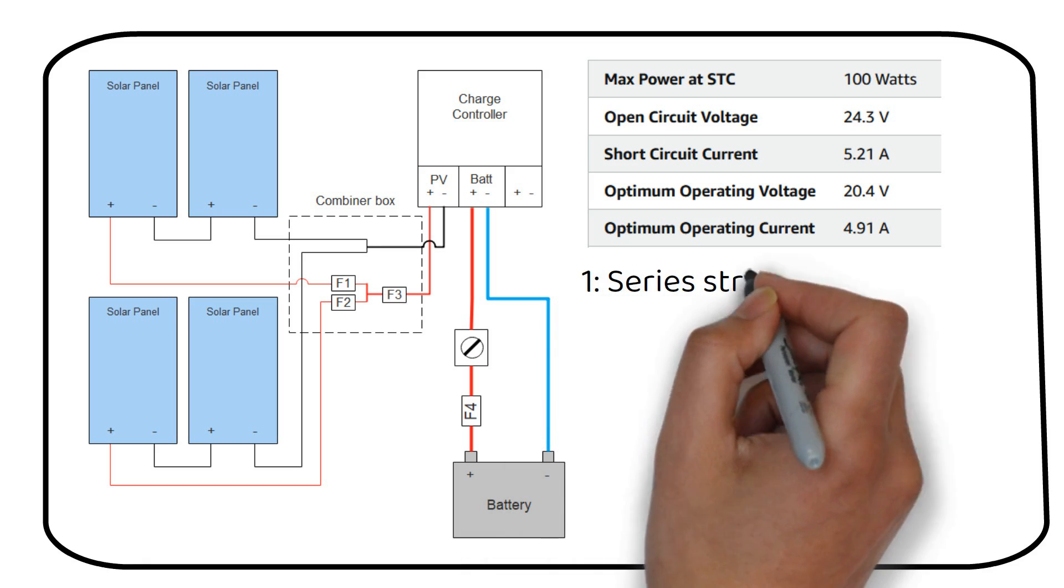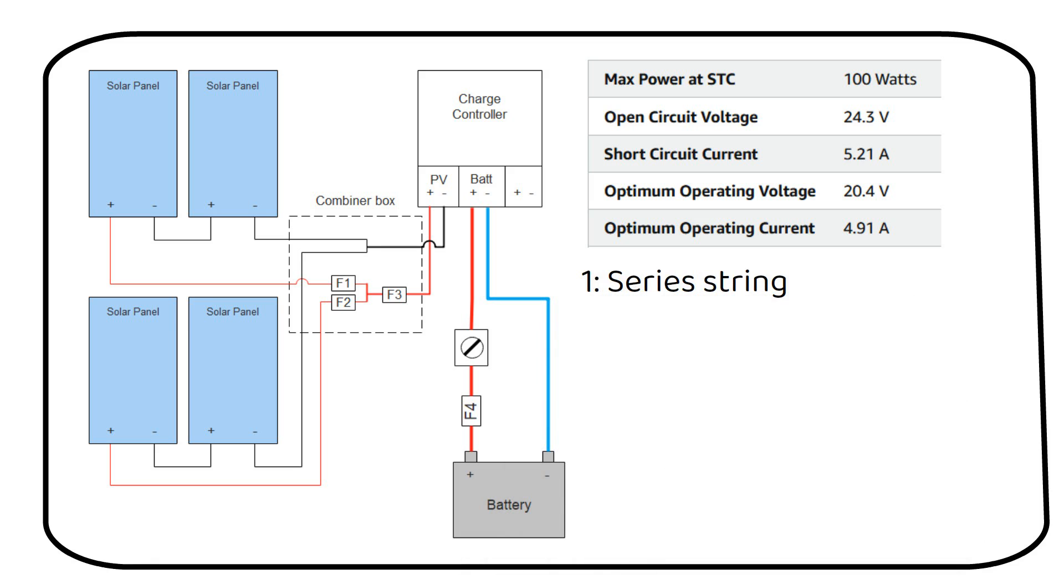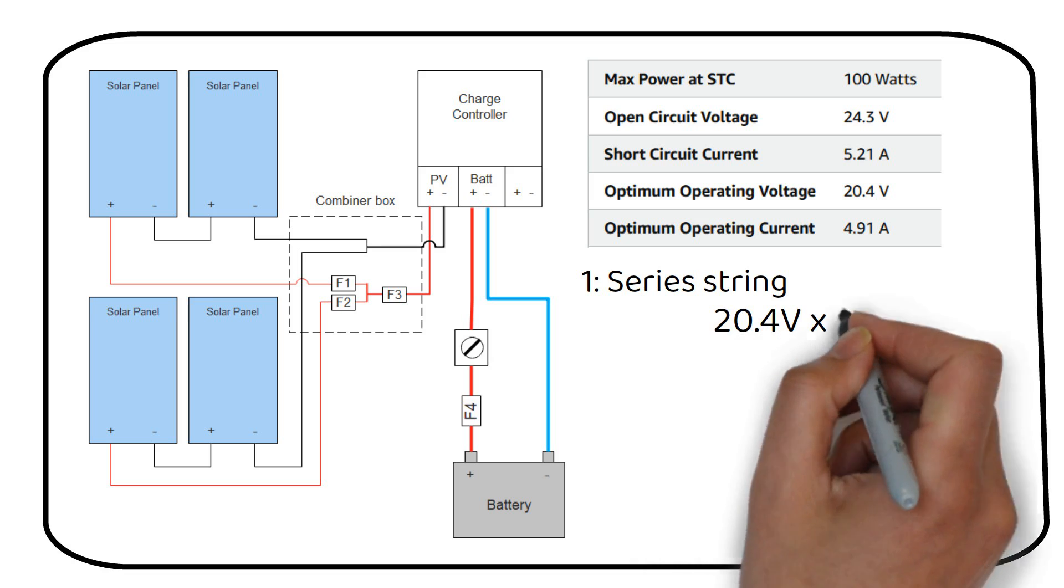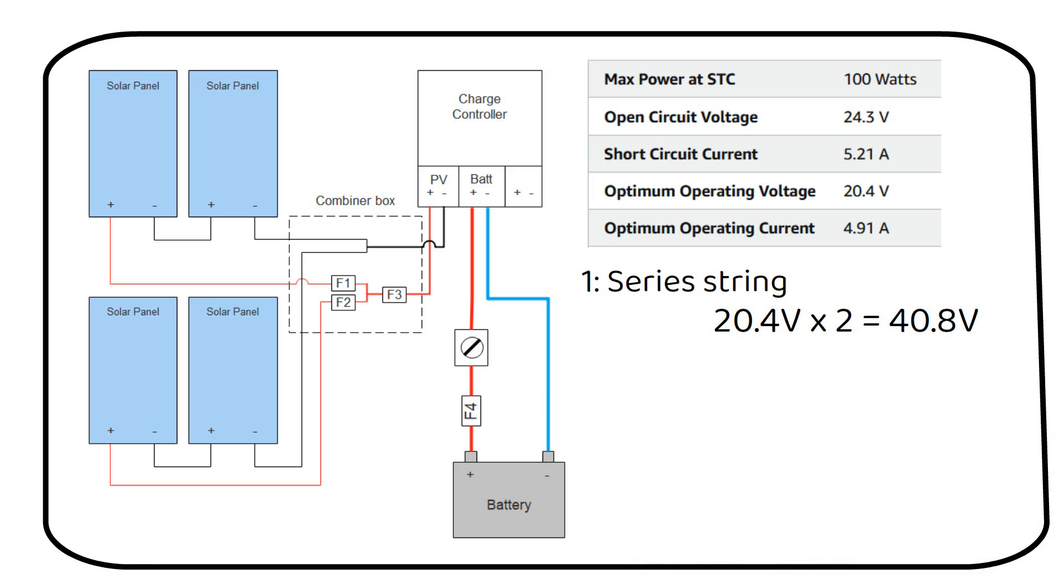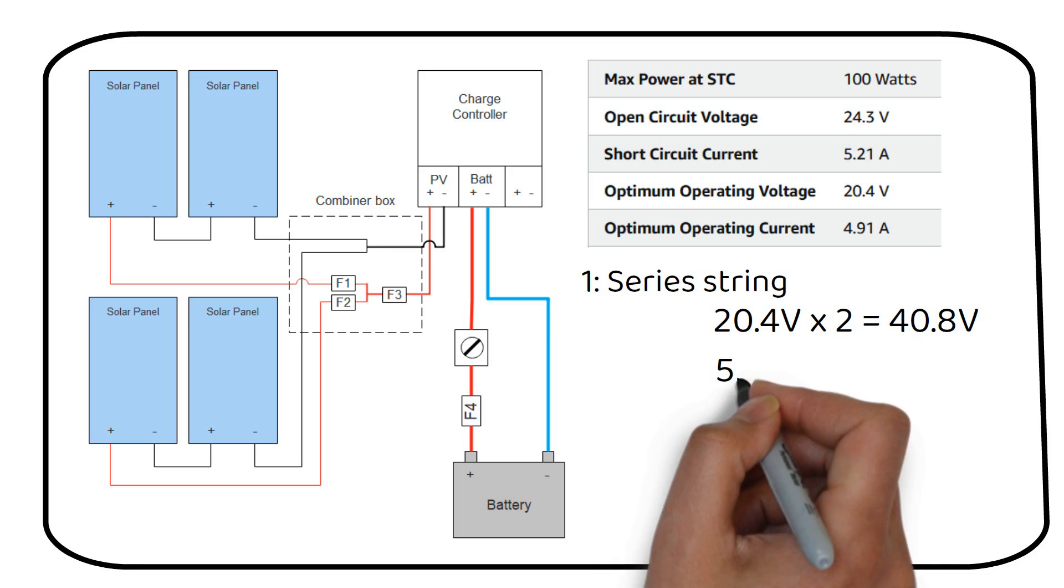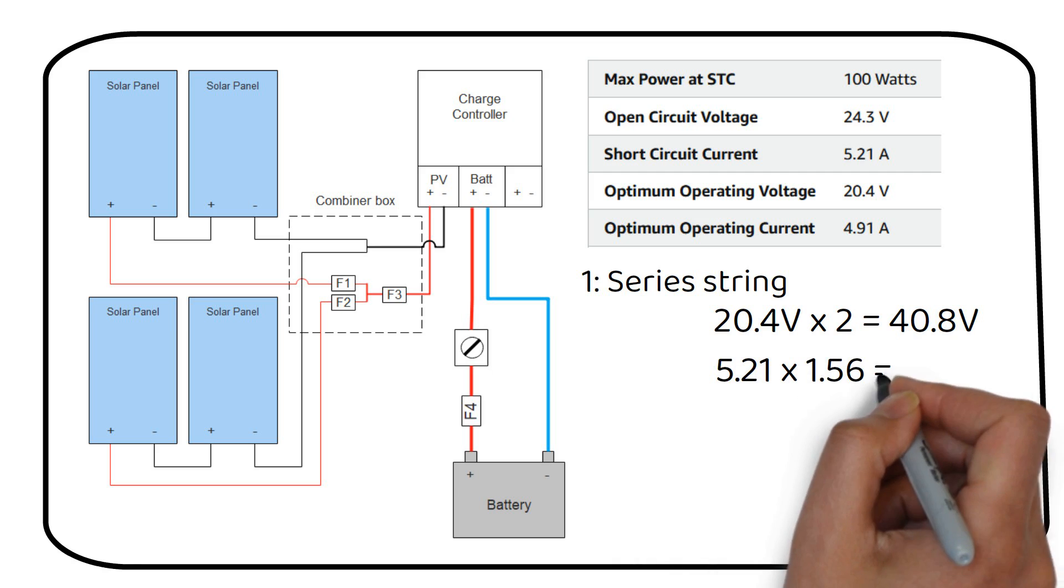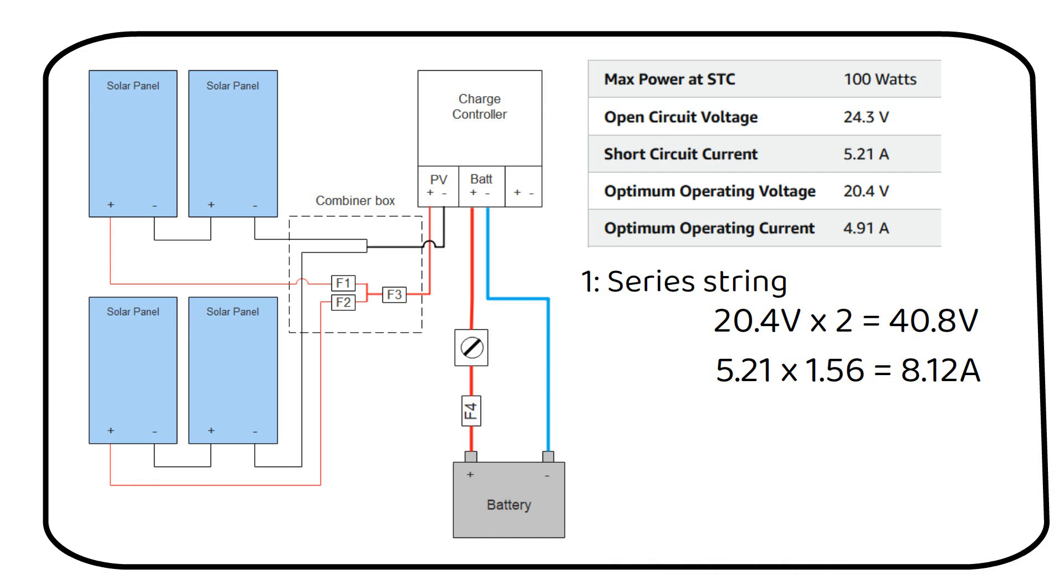Step 1: Calculating voltage and current for the series connection. For panels in series, voltages add up. So 2 panels with a VMP of 20.4V each gives us 40.8V in total. The current remains the same in series, but we apply our safety factor of 1.56. Thus, for panels with a short circuit current of 5.21 amps, the adjusted current is 8.12 amps.